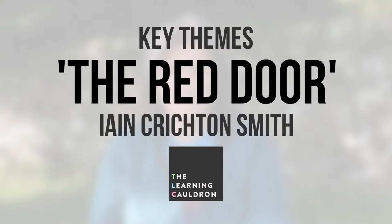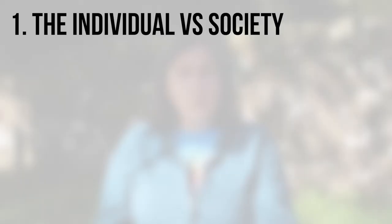Here are the key themes for the short story The Red Door by Ian Crichton-Smith. The Red Door explores two principal themes or issues. Here's a quick overview of each of them. The first is the individual versus society, or individuality versus conformity.